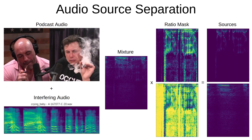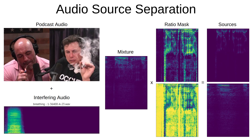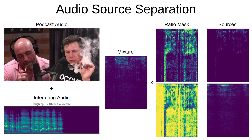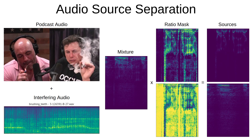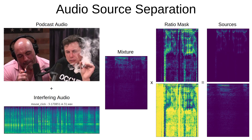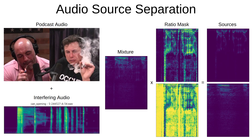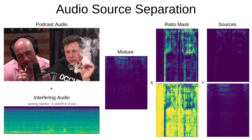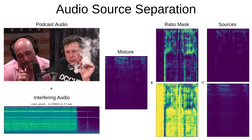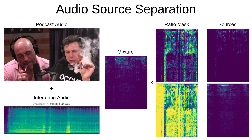And that's what we're going to be doing in these videos. We'll be using something called Open Unmix, written in PyTorch. What I've done here is I've taken 10 podcasts from the Joe Rogan experience and randomly mixed them into another dataset called ESC50, which is really just a bunch of environmental noises that we'll use as our interfering audio.